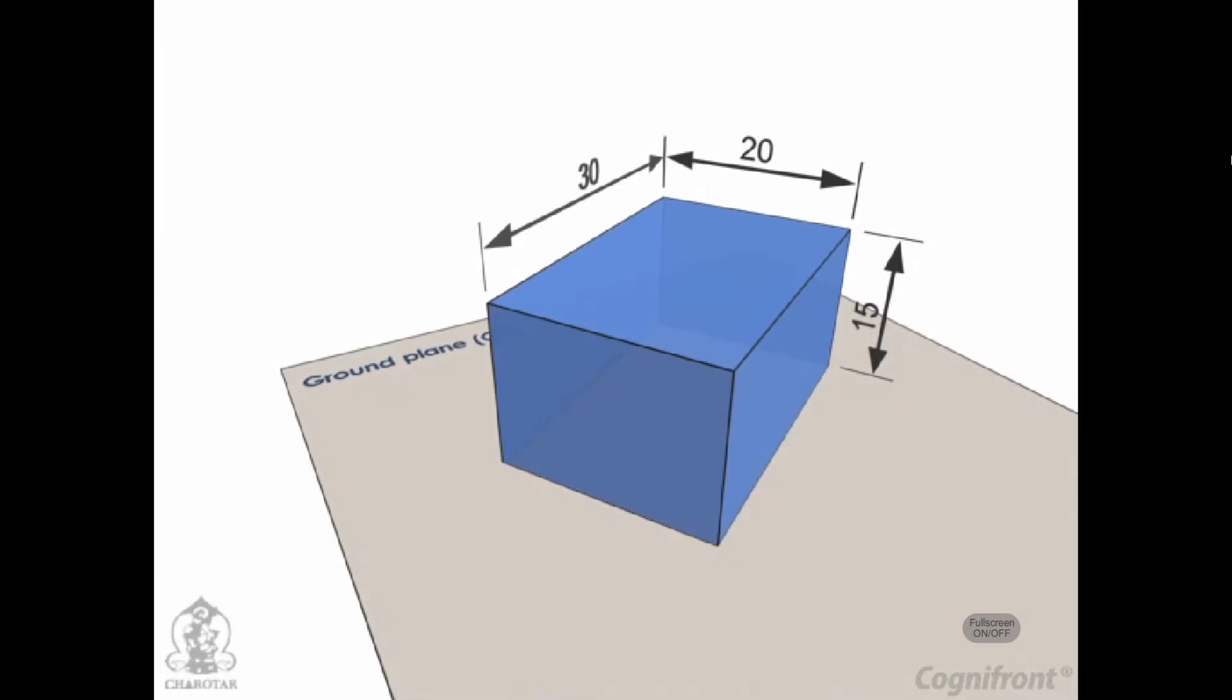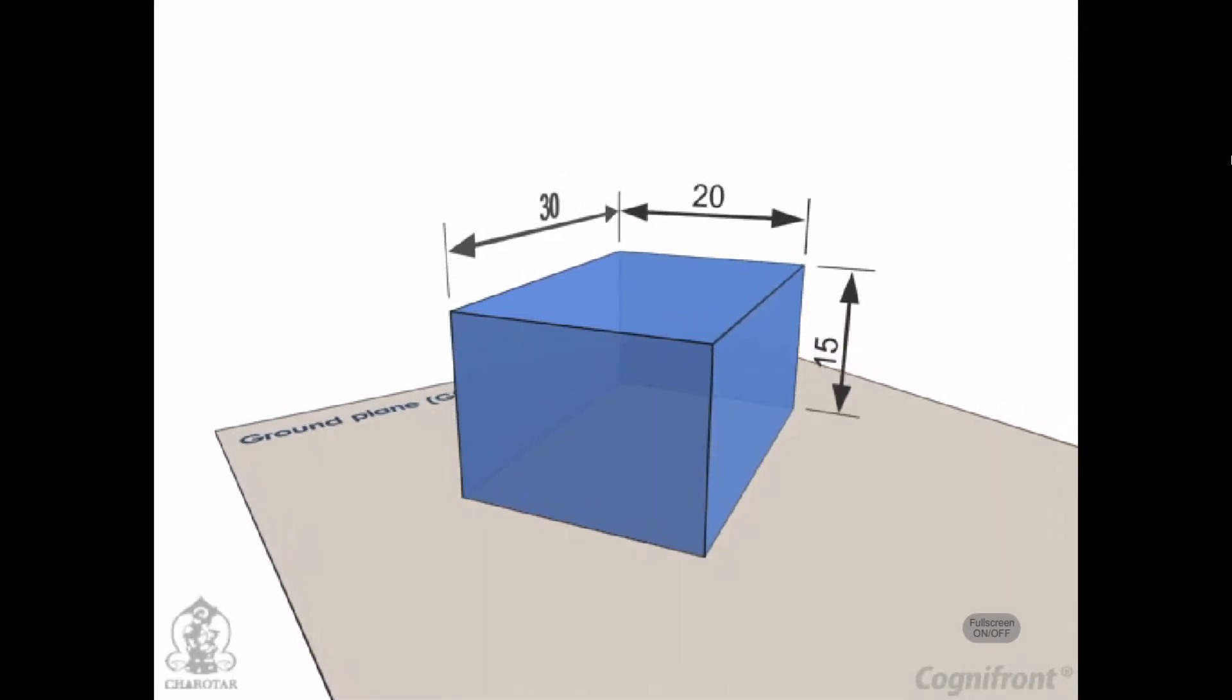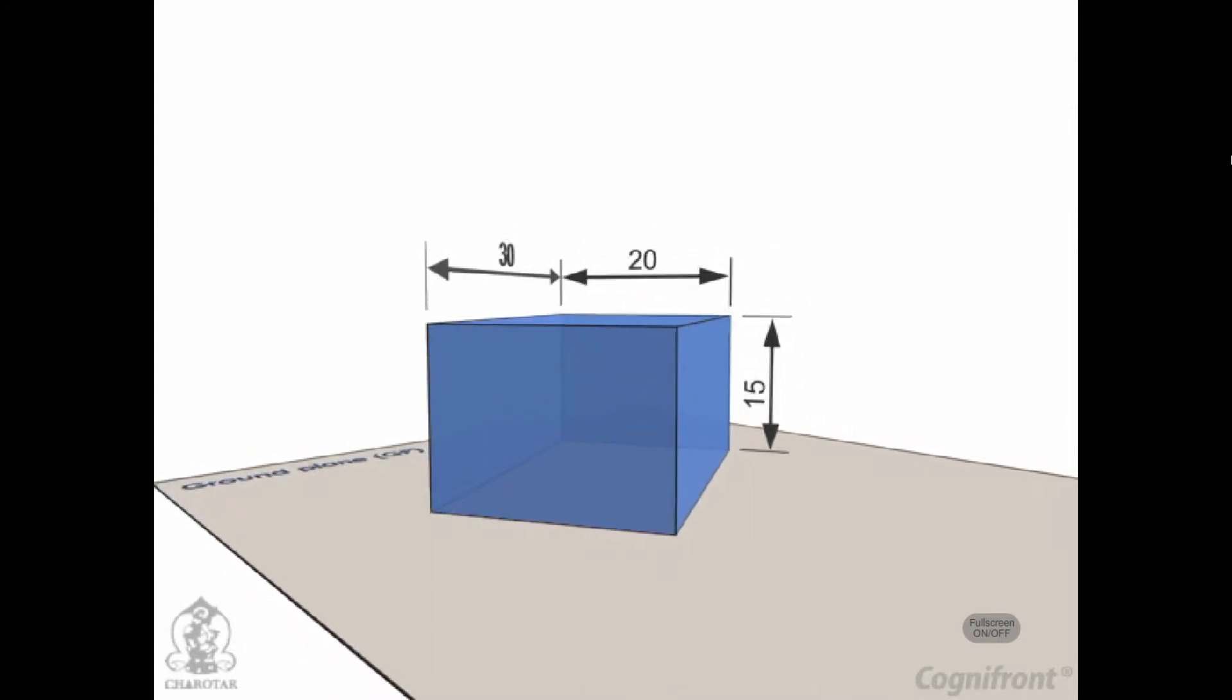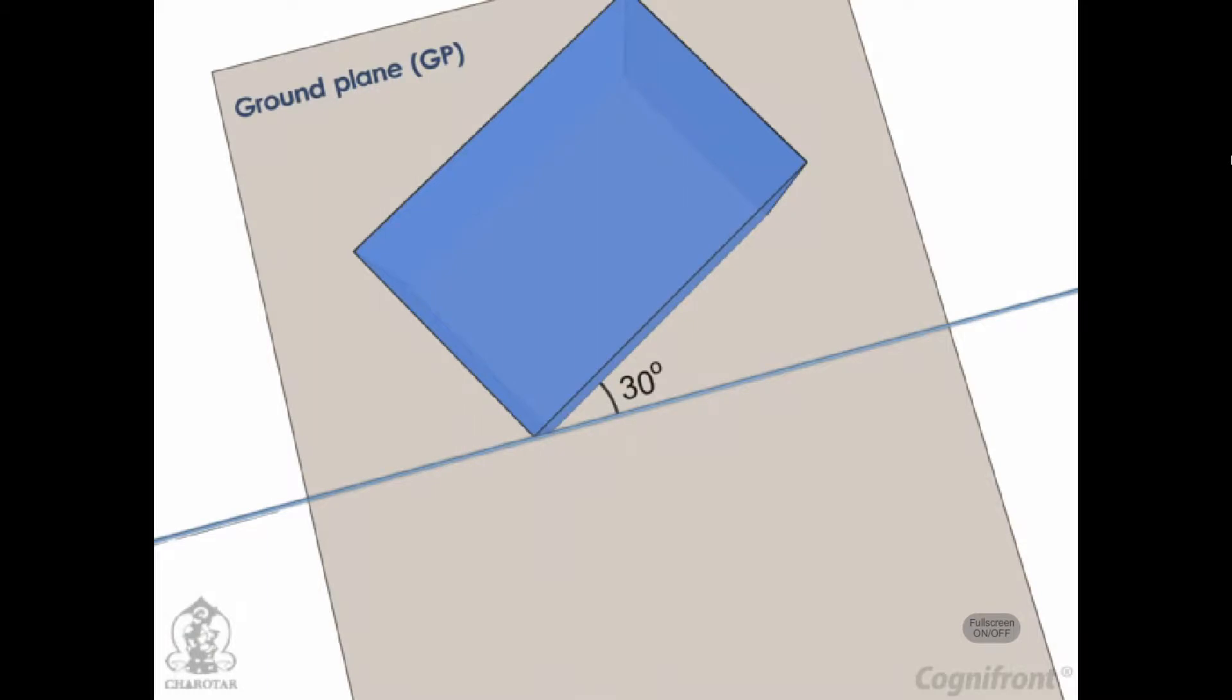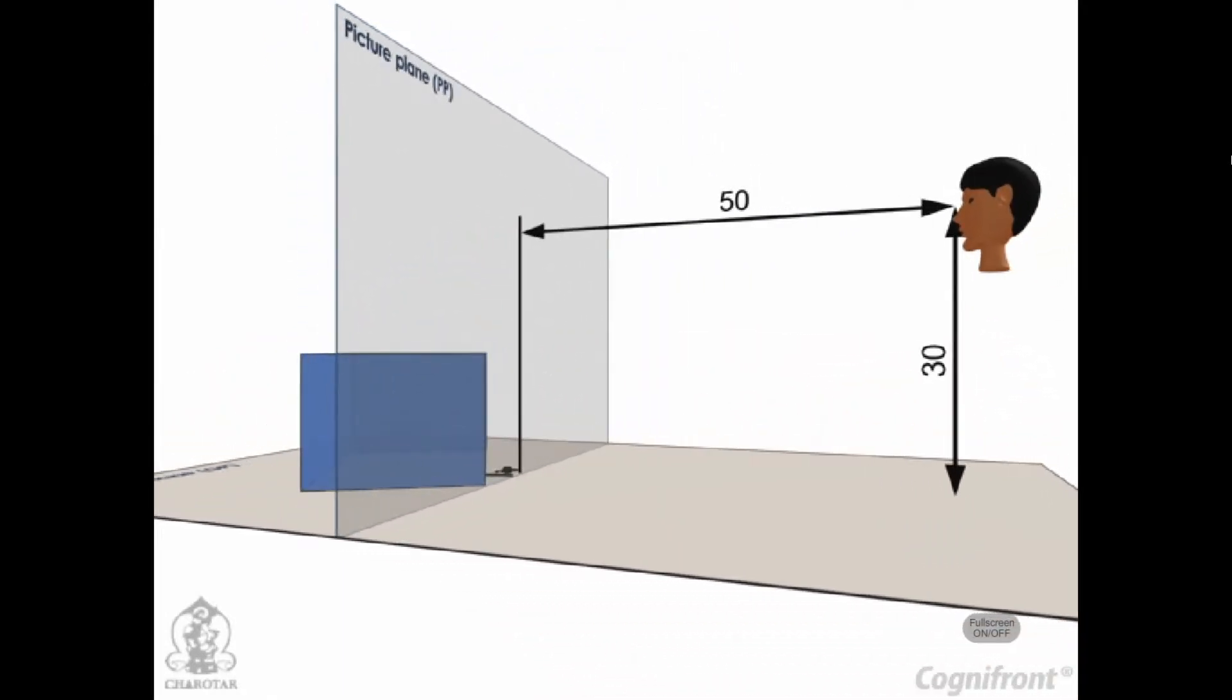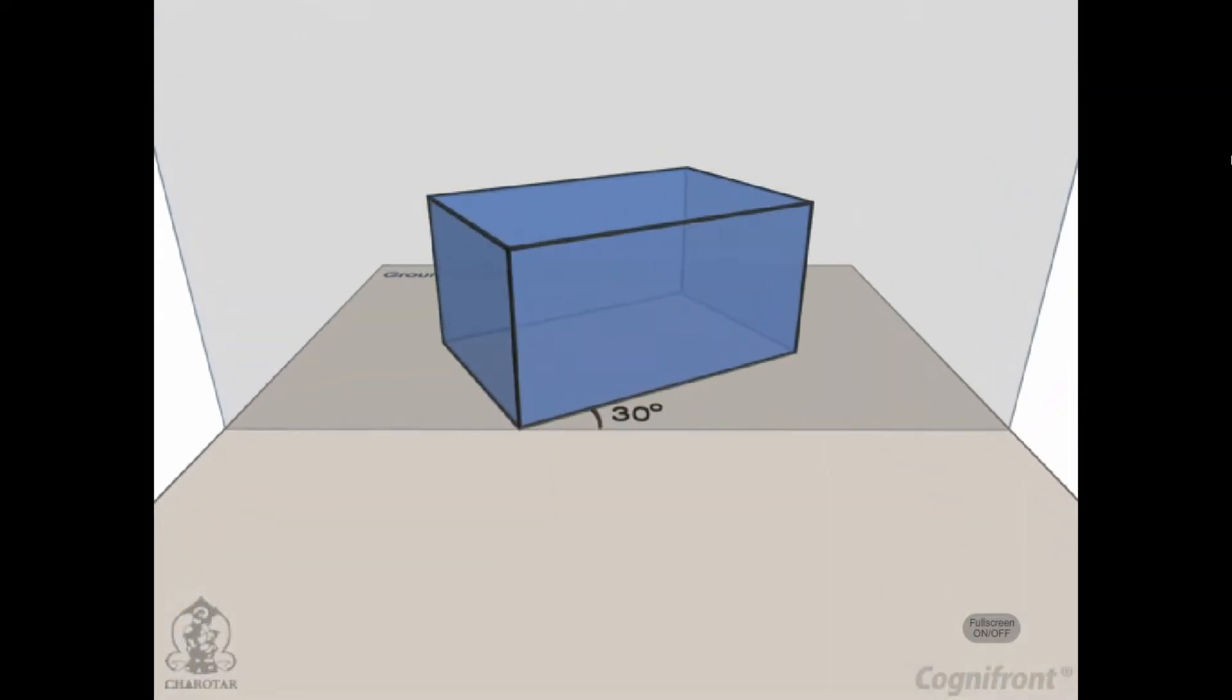Problem 19.4: A rectangular block 30mm x 20mm x 15mm is lying on the ground plane on one of its largest faces. A vertical edge is in the picture plane and the longer face containing that edge makes an angle of 30 degrees with the picture plane. The station point is 50mm in front of the picture plane, 30mm above the ground plane, and lies in a central plane which passes through the center of the block. Draw the perspective view of the block.